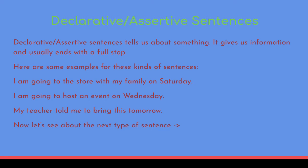Declarative or assertive sentences tell about something, give us information, and usually end with a full stop. They just tell us about something and give information. We all know what a full stop is — it's that little point which we put after every sentence. And in some sentences, that would be something else rather than a full stop, which we'll see later on.